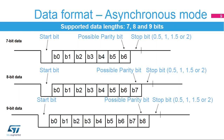The frame format used in asynchronous mode consists of a set of data bits in addition to bits for synchronization and optionally a parity bit for error checking. The USART supports 7, 8, or 9-bit data lengths. A frame starts with 1 start bit, where the line is driven low for 1-bit period. This signals the start of a frame and is used for synchronization. The start bit is followed by 7, 8, or 9 data bits. If parity control is enabled, the parity bit is transmitted as the last data bit and is included in the data length count.